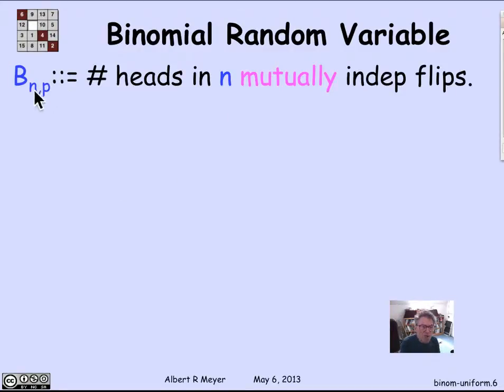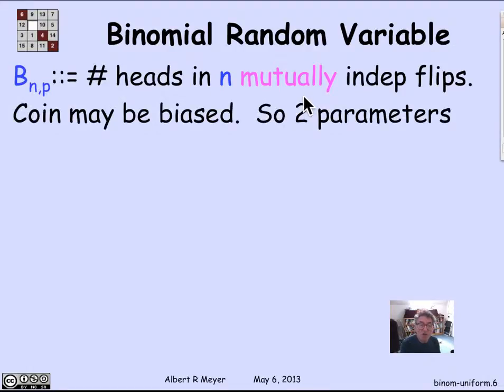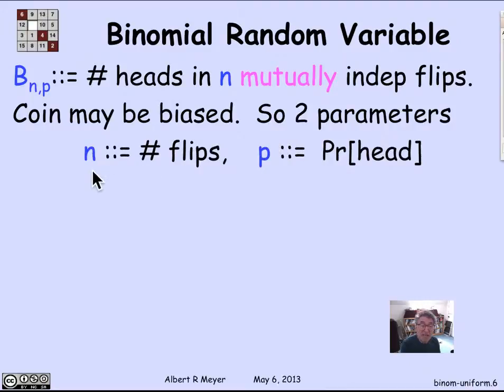Now, there's two parameters here, an n and a p, because we don't assume that the flips are fair. So one parameter is how many flips there are. The other parameter is the probability of a head, which might be biased that heads are more likely or less likely than tails. The fair case would be when p was a half.